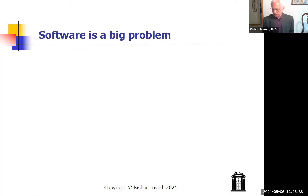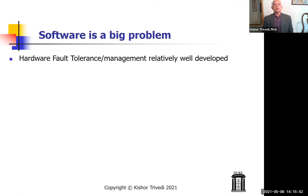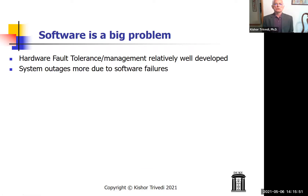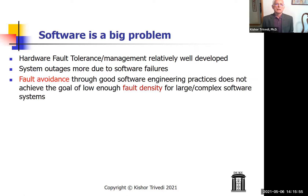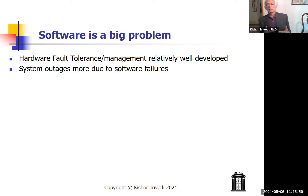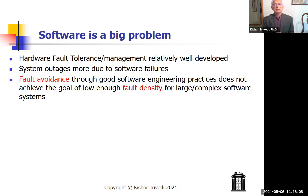Hardware fault tolerance and fault management are relatively well developed, and we are observing more and more outages due to software failures. There are four means of achieving high reliability and availability. Fault avoidance can be exercised through good software engineering practices and formal methods, but in spite of all these techniques, the number of bugs in large complex software systems remains quite large. We should continue to exercise these methods, but as of today we have a lot of bugs after we produce our software.